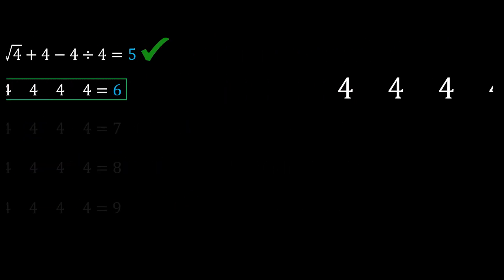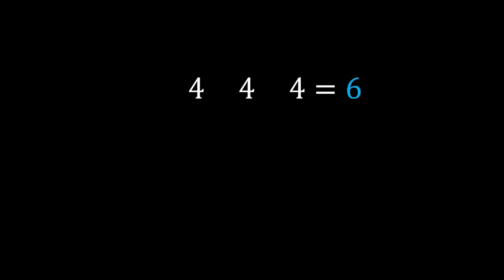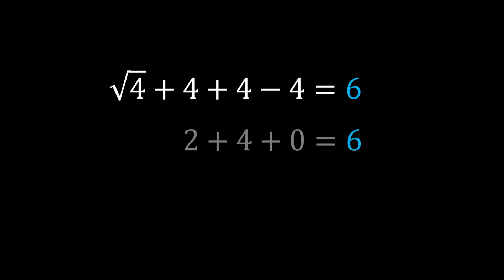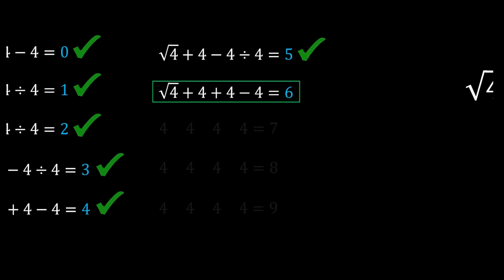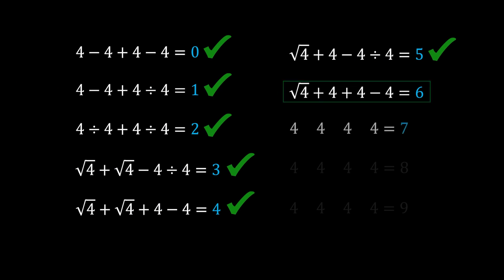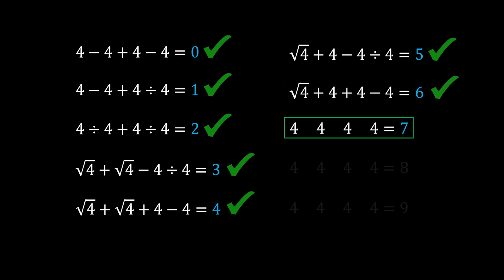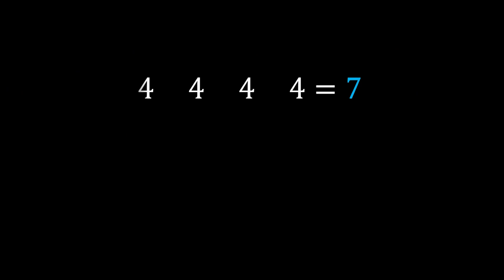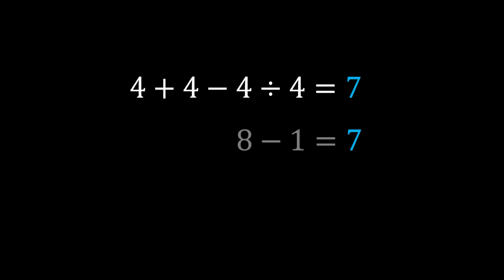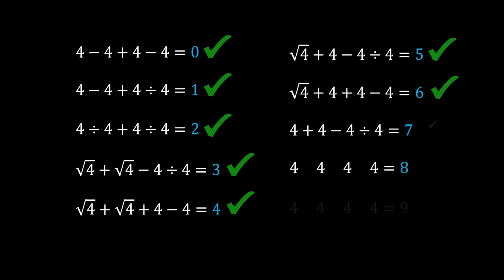Number 6: √4 + 4 + 4 − 4, and the 4 and −4 cancel, leaving 2 + 4 = 6. Number 7: 4 + 4 − 4 ÷ 4, which is 4 + 4 = 8, and 4 ÷ 4 = 1, so 8 − 1 = 7.